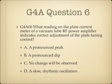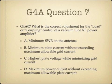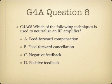Question 6: What reading on the plate current meter of a vacuum tube RF power amplifier indicates correct adjustment of the plate tuning control? A, a pronounced peak; B, a pronounced dip; C, no change will be observed; or D, a slow rhythmic oscillation. Question 7: What is the correct adjustment for the load or coupling control of a vacuum tube RF power amplifier? A, minimum SWR on the antenna; B, minimum plate current without exceeding maximum allowable grid current; C, highest plate voltage while minimizing grid current; or D, maximum power output without exceeding maximum allowable plate current. Question 8: Which of the following techniques is used to neutralize an RF amplifier? A, feed forward compensation; B, feed forward cancellation; C, negative feedback; or D, positive feedback.